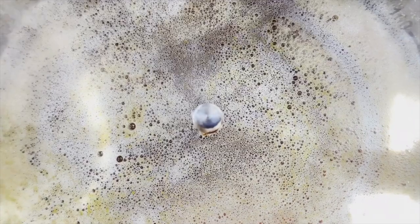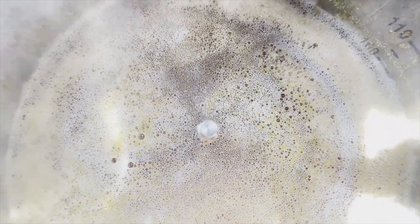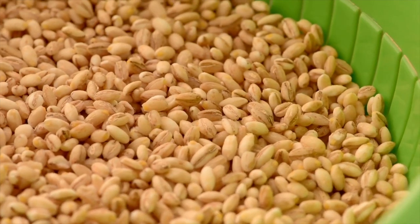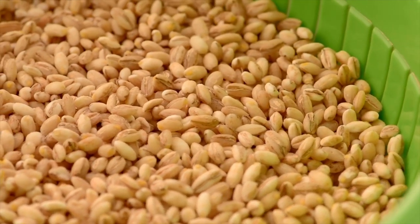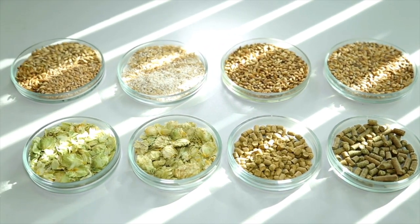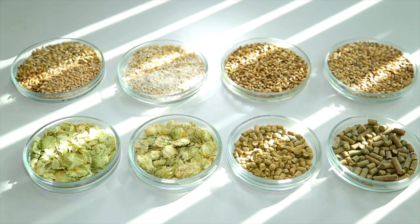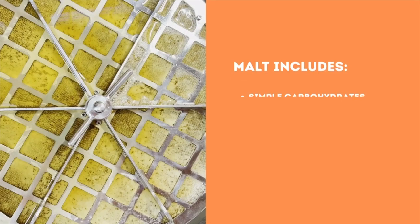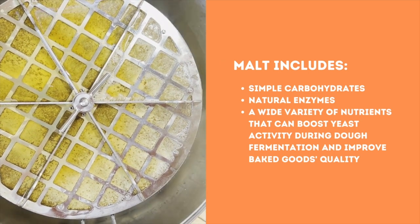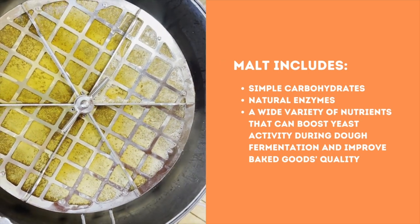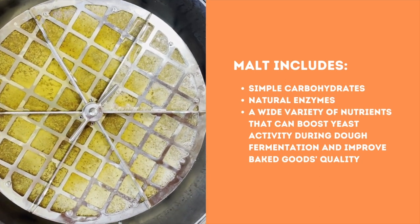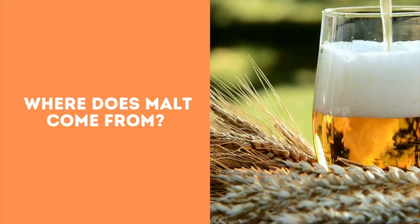What is malt? Malt is the result of an enzymatic process for germinating grains and allowing them to sprout. Barley is the most commonly malted grain due to its high enzyme content. Other grains such as wheat, rice, oats, millets, corn, rye, sorghum, and triticale can be used as well. It includes simple carbohydrates, natural enzymes, and a wide variety of nutrients that can boost yeast activity during dough fermentation and improve baked goods quality.